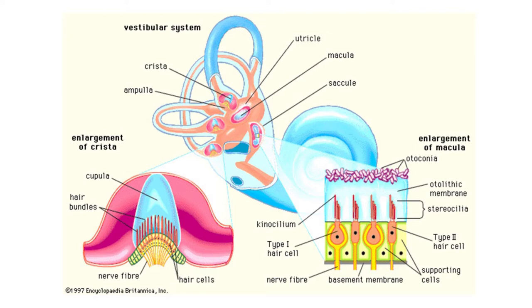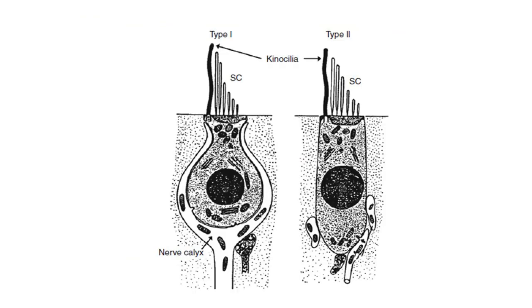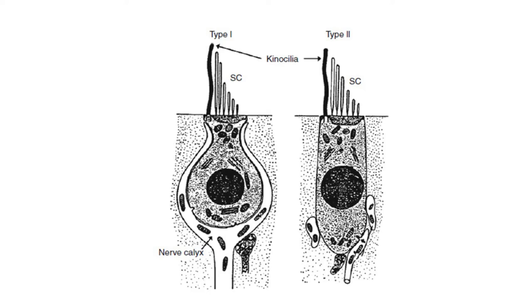Looking at the hair cells in the utricular or saccular macula and in the cupula, there are two types — type one and type two — very similar to our outer and inner hair cells respectively. What is important is the stereocilia. The longest stereocilium is the kinocilium, and all stereocilia are connected to each other by what is known as tip links — a mechanical kind of door that, when opened, allows ions to enter the hair cells and generate action potentials.